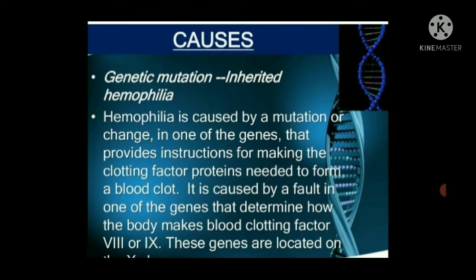Causes — genetic mutation and inheritance: Hemophilia is caused by a mutation or change in one of the genes that provides instructions for making the clotting factor proteins needed to form a blood clot. It is caused by a fault in specific genes that determine how the body makes a blood clotting factor. These genes are located on the X chromosome, and a problem there leads to hemophilia.